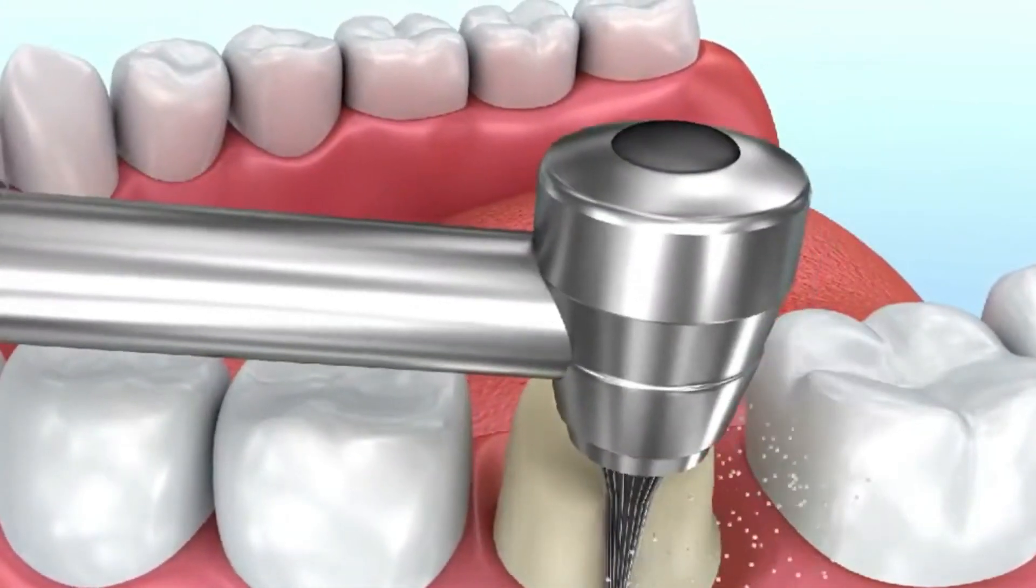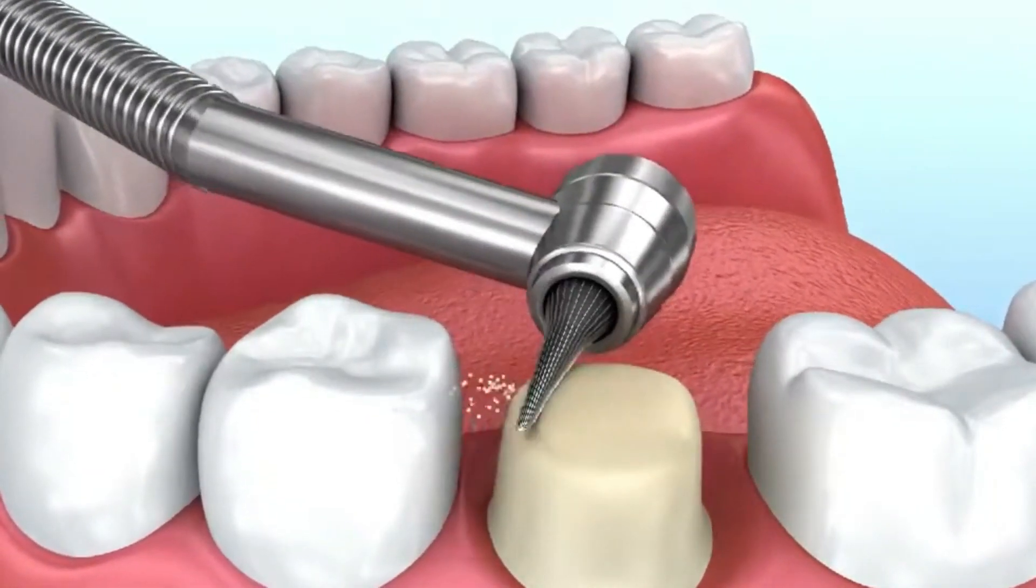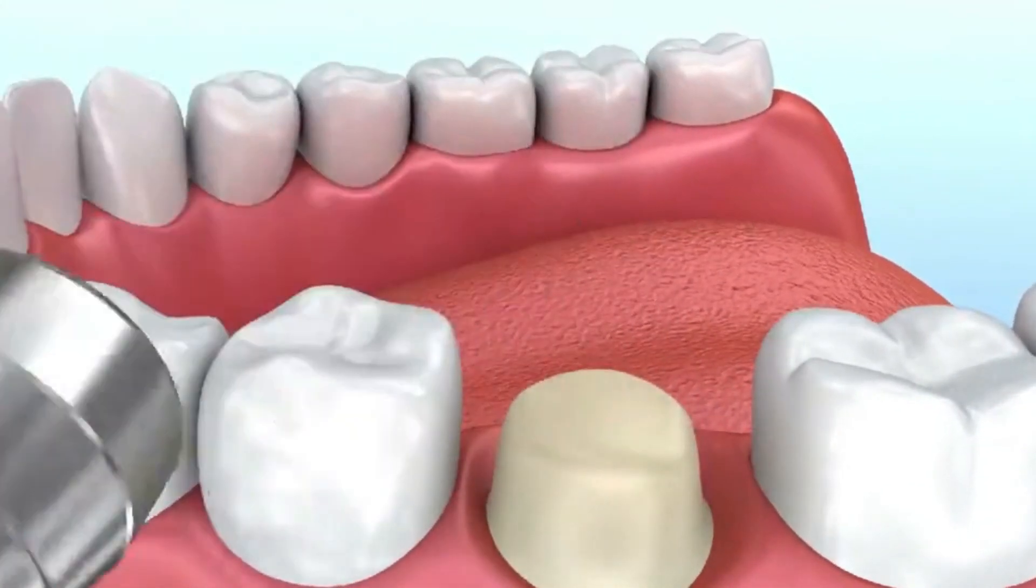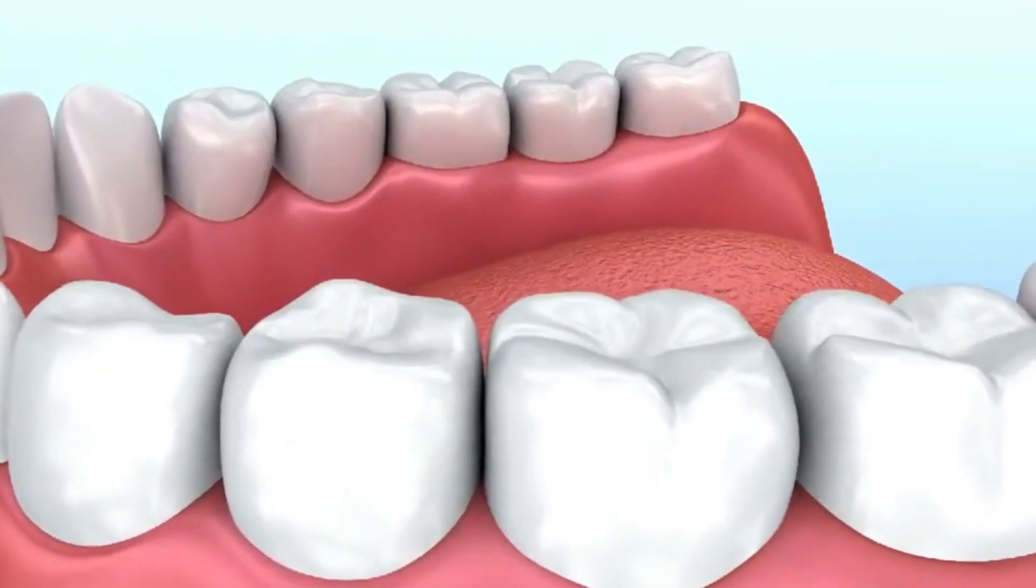The first electric dental drill was patented in 1875 by Dr. Green. And by 1914, electric dental drills could reach speeds of up to 3,000 rpm.